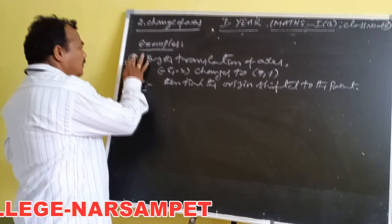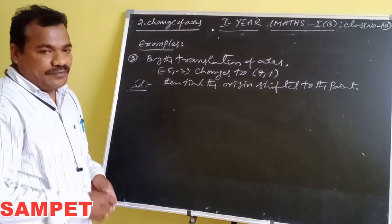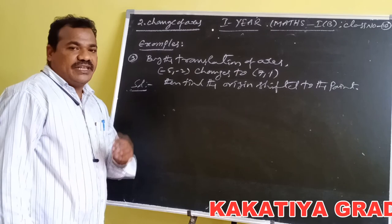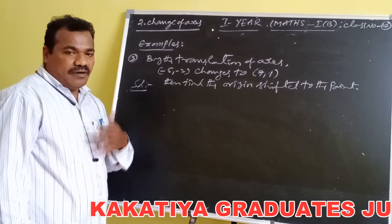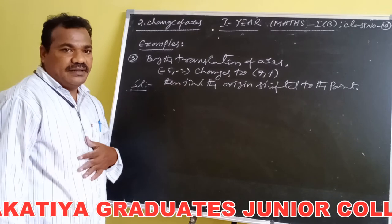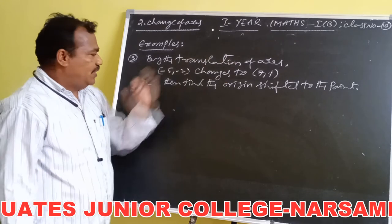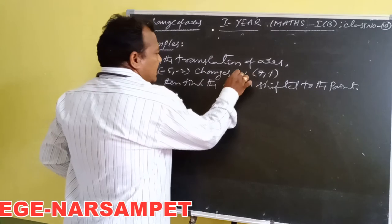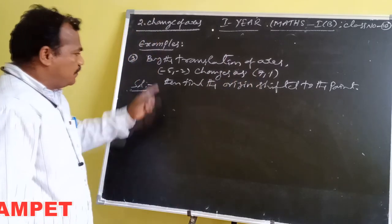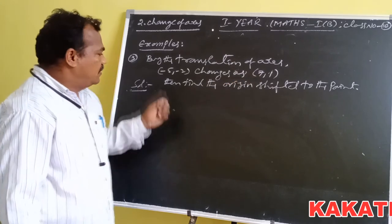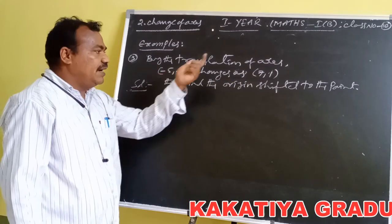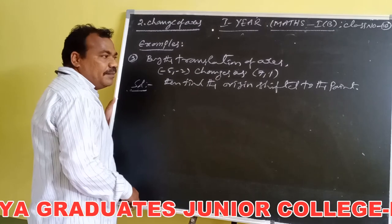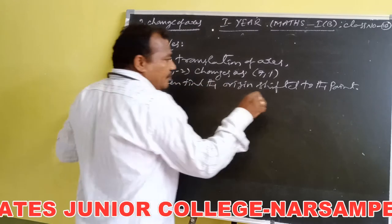This is the third example based on translation of axes. Translation of axes means without changing the direction of the coordinate axes, the origin is shifted to another fixed point in that plane. By the translation of axes, the point (−5, −2) changes to (7, 1). This point is the old system coordinate, and (7, 1) is the new system coordinate. Find the point to which the origin is shifted.